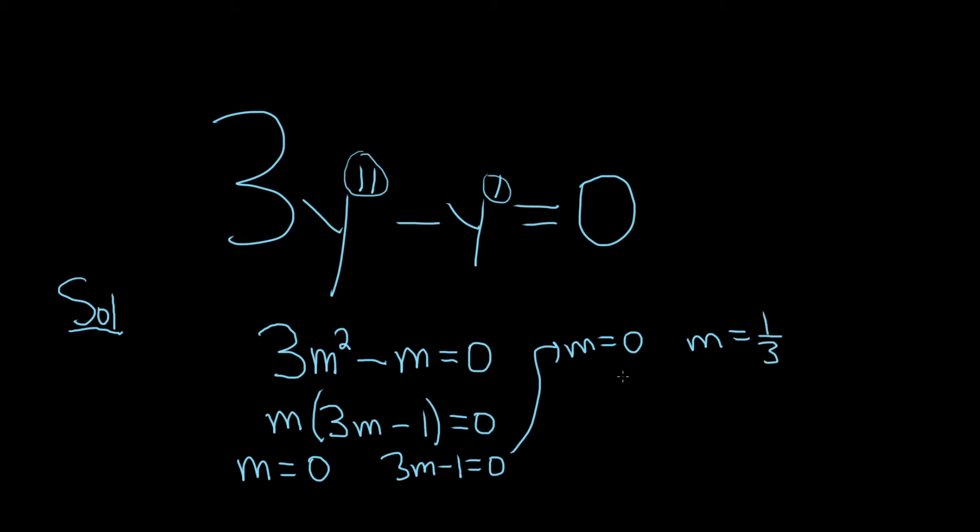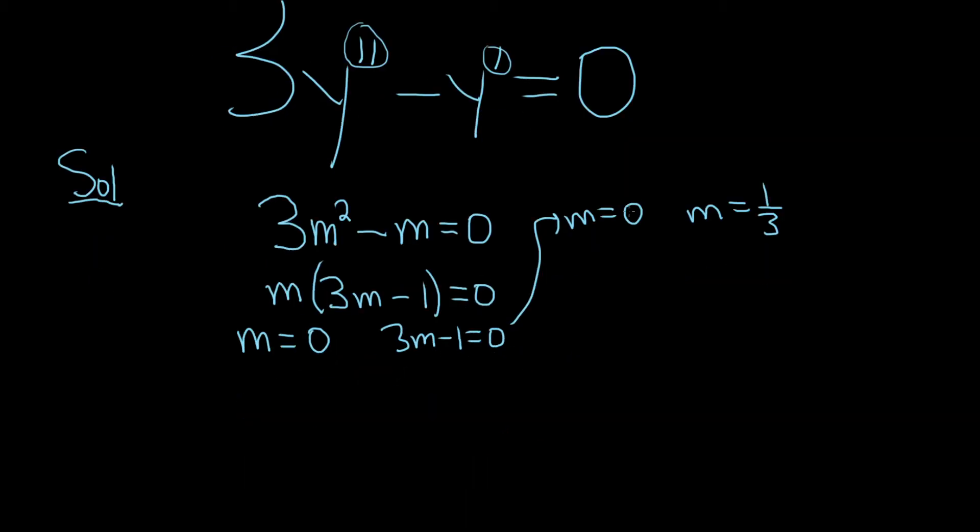So we have what's called distinct real roots. And whenever you have distinct real roots, the formula for the solution to this problem is always going to be y equals c1 e to the m1 times x plus c2 e to the m2 times x. So all we do now is plug in our m's.